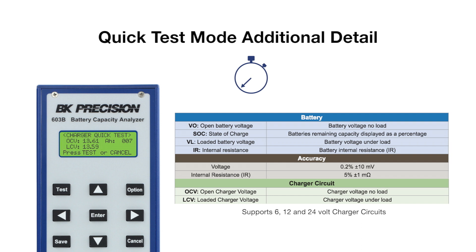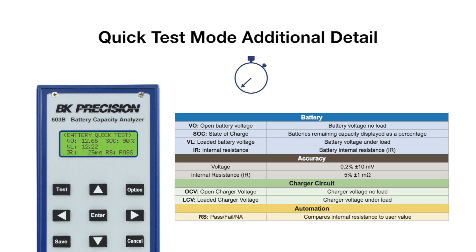Quick Mode recalls the last value entered for amp hour, making it easy to evaluate several batteries one after the other. Finally, the Pass/Fail option provides a quick and easy pass or fail indication based on the user-provided internal resistance value. If the internal resistance value is not provided, the display will show NA.